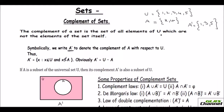You denote the complement of a set by A complement symbol. Symbolically, A complement means the elements X where X belongs to the universal set and X does not belong to set A. So A complement will be the universal set minus A — you just remove the elements of A from the universal set. That is what A complement is.